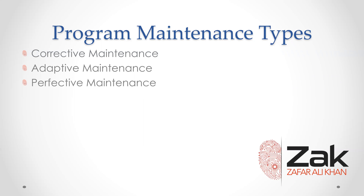Now, let's revise once again. Corrective maintenance refers to the work required when the program is not working correctly due to a logic error or because of a runtime error. Sometimes program errors don't become apparent for a long time because it is only under very rare circumstances that there is an unexpected result or the program crashes. These circumstances might arise because part of the program is not used often, or because the data on an occasion includes extreme values.